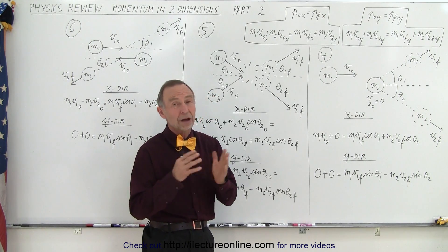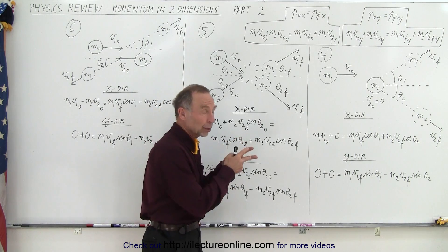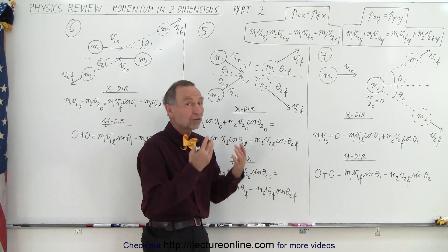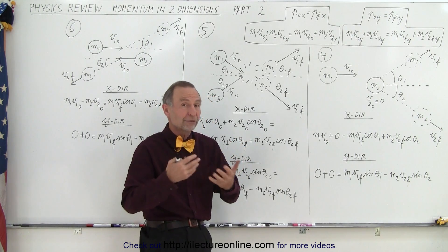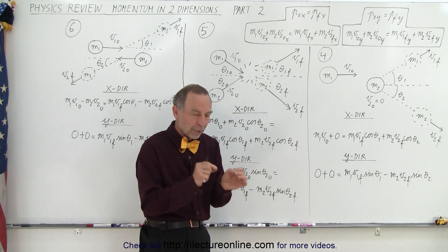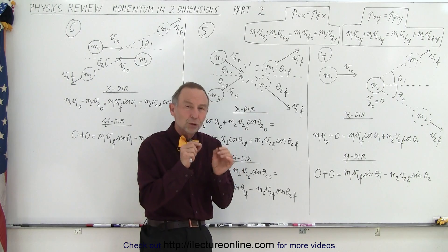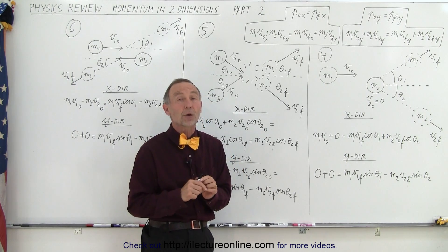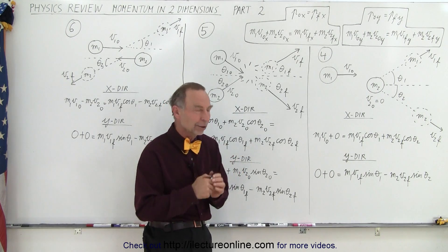And so obviously with only two equations, you can't solve something with four unknowns. So typically in the problem, they give you two of those four unknowns.